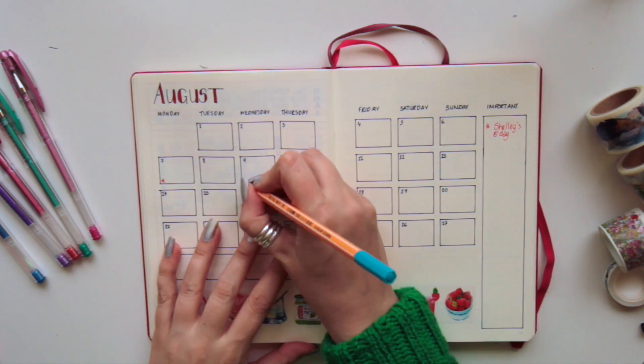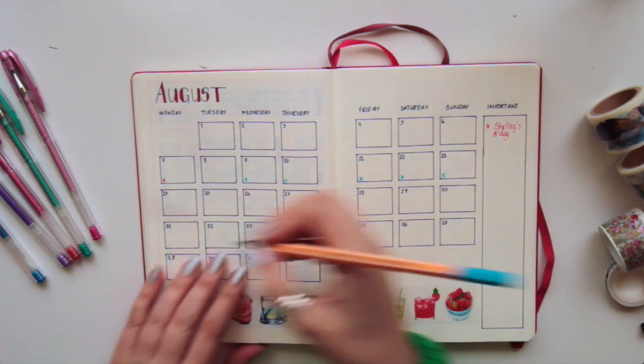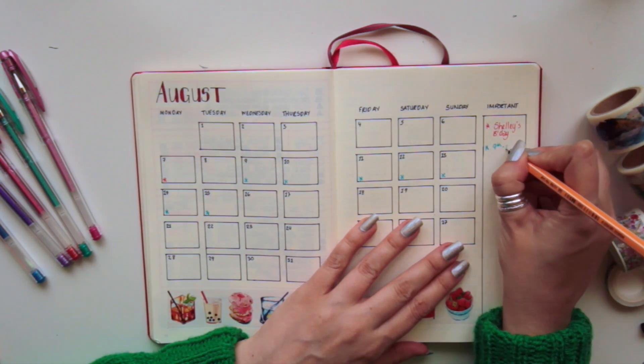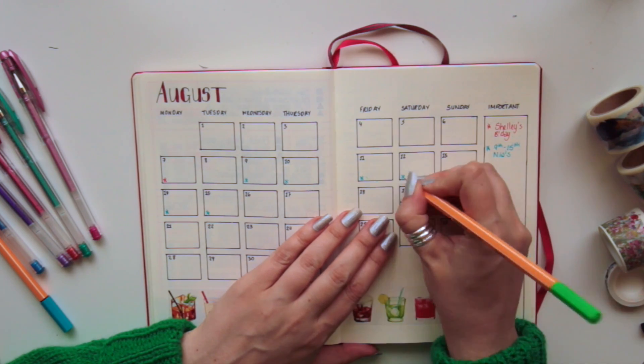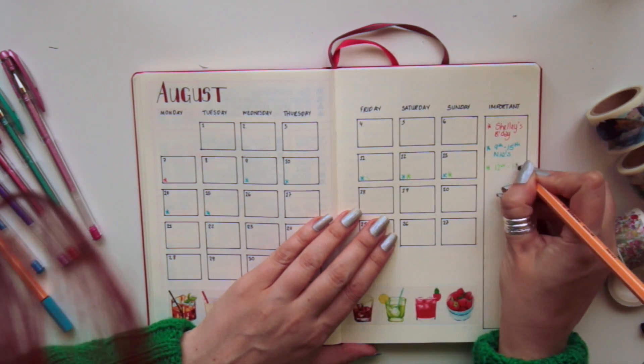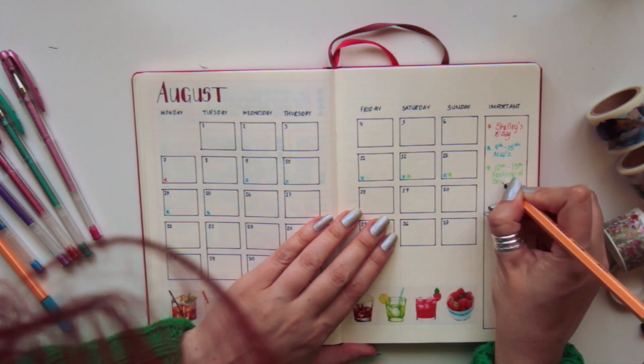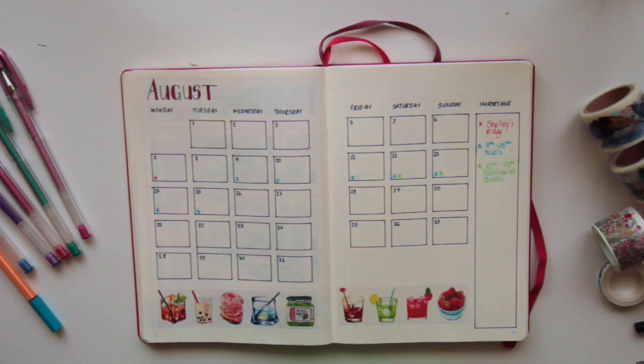I color code everything, and as the boxes are quite small I put stars in. Then in the important bar over on the side I will write in a more detailed description of what the stars mean. So I'm going to my sister-in-law's for just under a week so we can go to the festival of quilts for the next weekend.